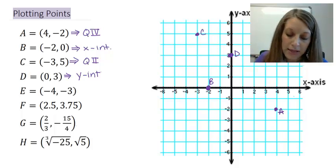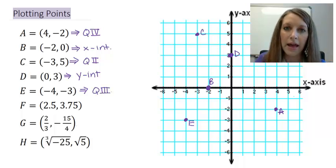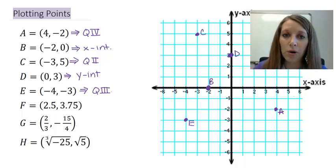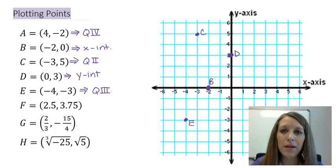Point E is left 4 units, down 3 units. So that is down here. So I can see that's the bottom left quadrant, so that is in quadrant 3 or quadrant III. So A through E are really easy because those are just typical ordered pairs. Now, F, G, and H are a little bit more complicated because they're not whole numbers, but not that big a deal. We can always convert them to fractions or decimals if need be and go from there.